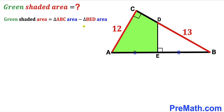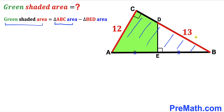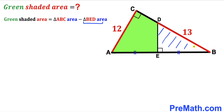The green shaded region area is going to be equal to the area of the bigger triangle ABC minus the area of the smaller triangle BED. So our task is now to calculate the area of triangle ABC and the area of triangle BED.